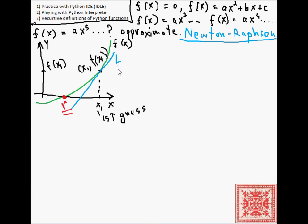So let's draw a line, L, tangent to the green curve at that point. Notice this intersection, let's call it x2. And it's a lot closer to the real root than x1.